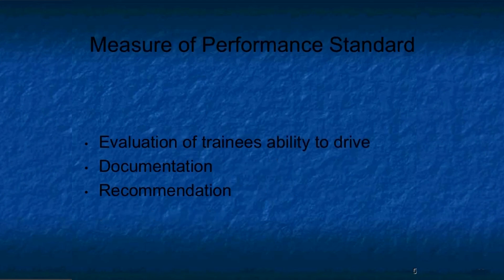How do we measure the performance? The trainer should do an evaluation of the trainee's ability to drive the bus during Phase 2 of the program, which is the six hours of driving an empty bus. Trainers should document the progress of the trainee by using an evaluation instrument. The driver must successfully complete the phase prior to entering driving Phase 3, which is driving with students. This phase, if successfully completed, should culminate with a successful evaluation and recommendation from the driver trainer.